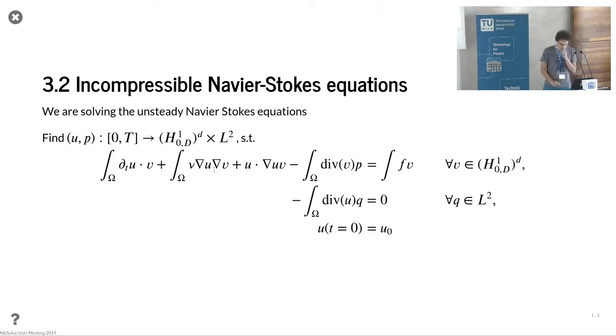Now we move to incompressible Navier-Stokes equations. You're already prepared from the Stokes tutorial we had before. Now we only change this slightly by adding the time derivative, so we have a time-dependent problem now, and also adding the convection part here, which of course is nonlinear because the convection itself is a solution of the Navier-Stokes problem.